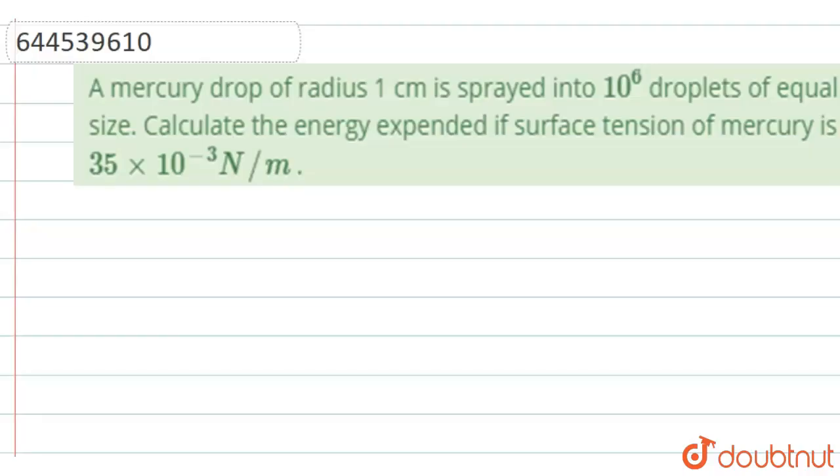Hello, dear student. The question says, a mercury drop of radius 1 cm is sprayed into 10 raised to 6 droplets of equal size, means all the radii of small drops are same. Calculate the energy expanded if surface tension of mercury is 35 into 10 raised to minus 3 newton per meter. So, this is the complete question.